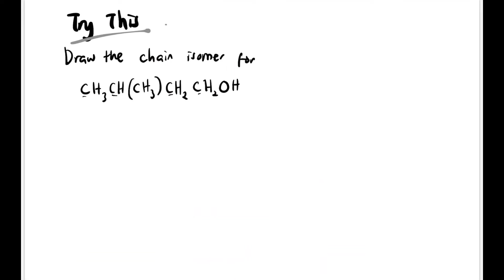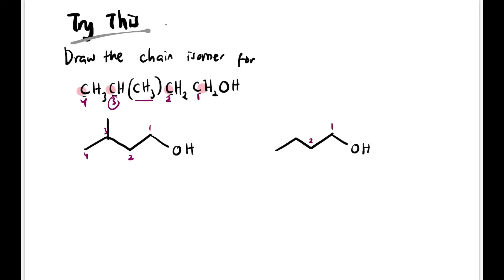Now let's look at chain isomers for a compound that has a functional group: draw the chain isomers for CH3CH(CH3)CH2CH2OH. The main chain has 4 carbons, with an OH at one end and a CH3 branch at carbon 3. If we move the branch from carbon 3 to carbon 2, that gives us a different carbon skeleton, so this is also a chain isomer. Structure A and structure B are chain isomers.